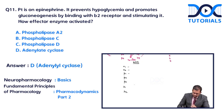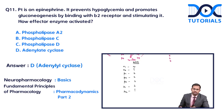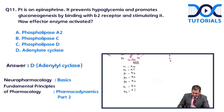The mnemonic 'KISSI' — K-I-S-S-I — is used to remember the nature of individual receptors: Gq, Gi, Gs, Gs, Gs, Gs, Gs, Gi. This helps remember the G-protein coupling of each receptor subtype.